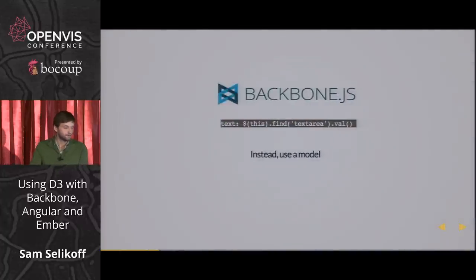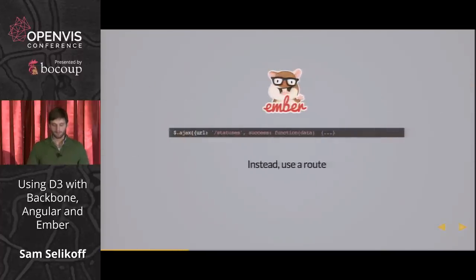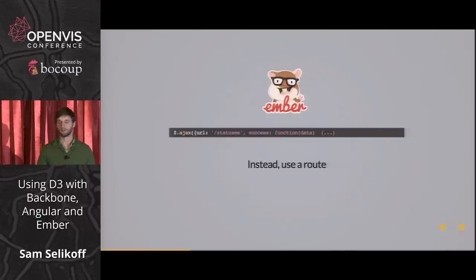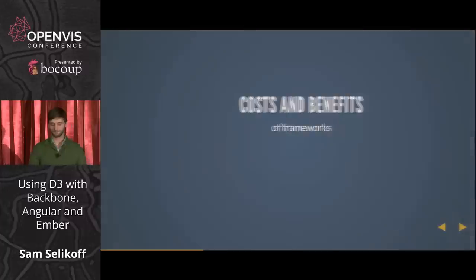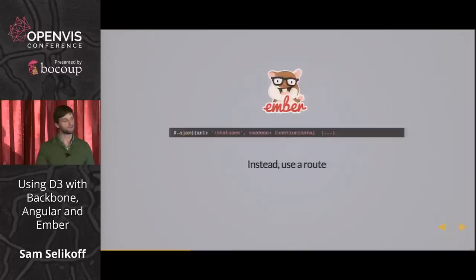If we were using Backbone, instead of querying the DOM for the data, we might store it in a model — that's one of the main layers Backbone provides. If we were using Angular, we could use a directive to encapsulate the templating portion of our GUI. And in Ember, instead of making ad hoc Ajax requests, we could use a route — one of the main purposes of routes in Ember is to provide an object responsible for getting data from the server. All the frameworks have solutions in varying degrees.